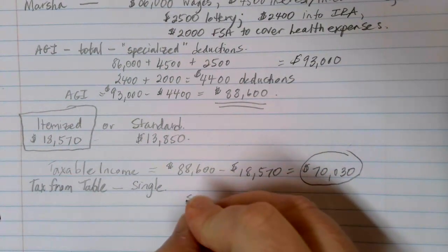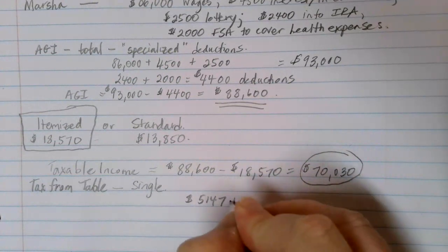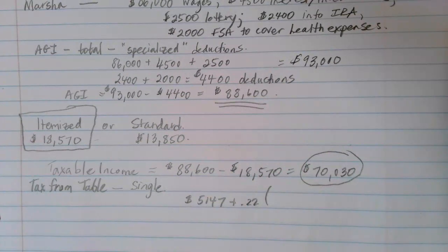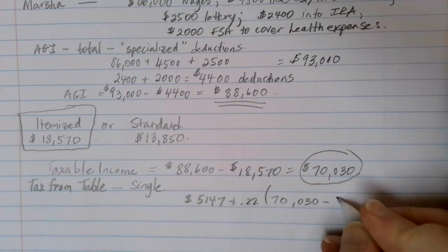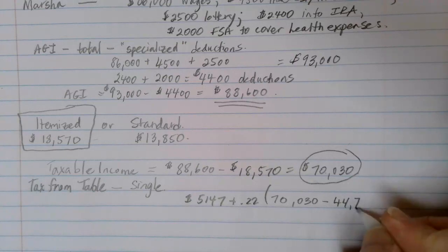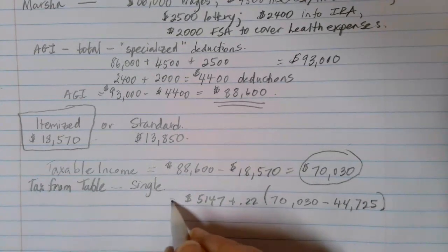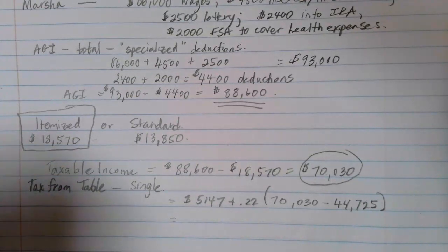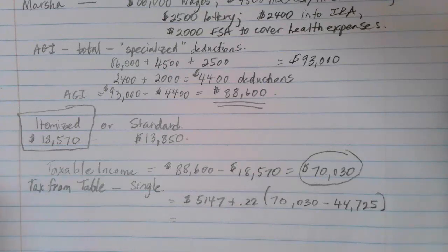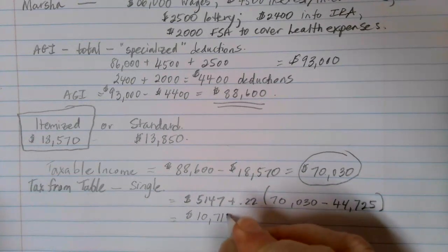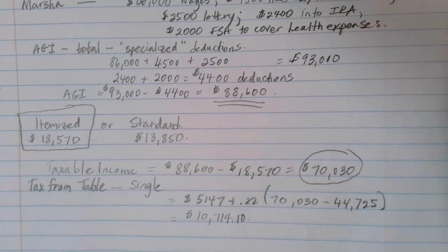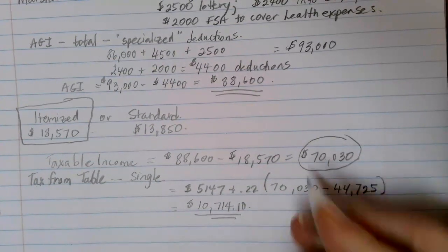So we calculate $5,147 plus 22% of the amount over $44,725. Since Marsha made $70,030, we subtract $44,725 from the table to get the amount in the bracket. Pulling out our calculator: $5,147 plus 22% of ($70,030 minus $44,725) gives us $10,714.10. This is the amount of tax that Marsha is going to owe.